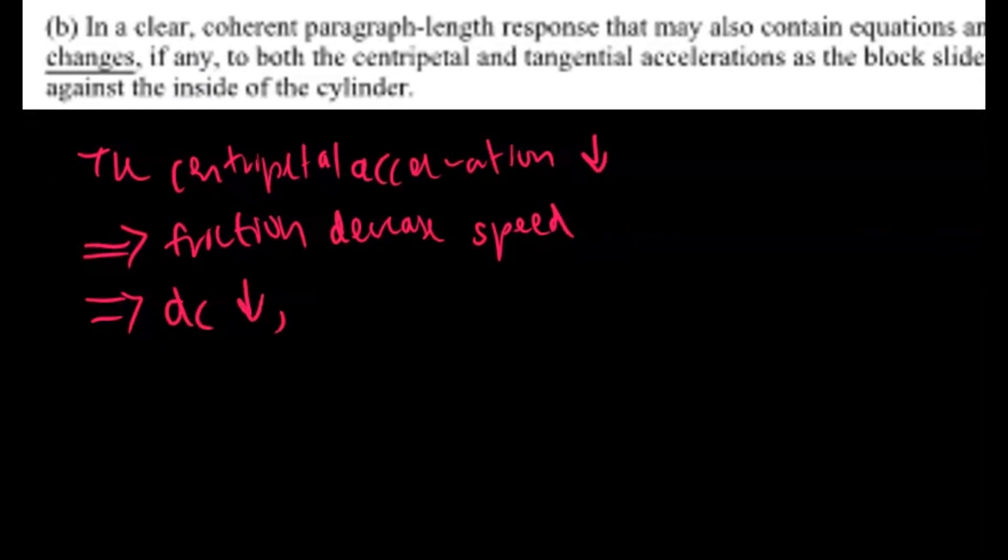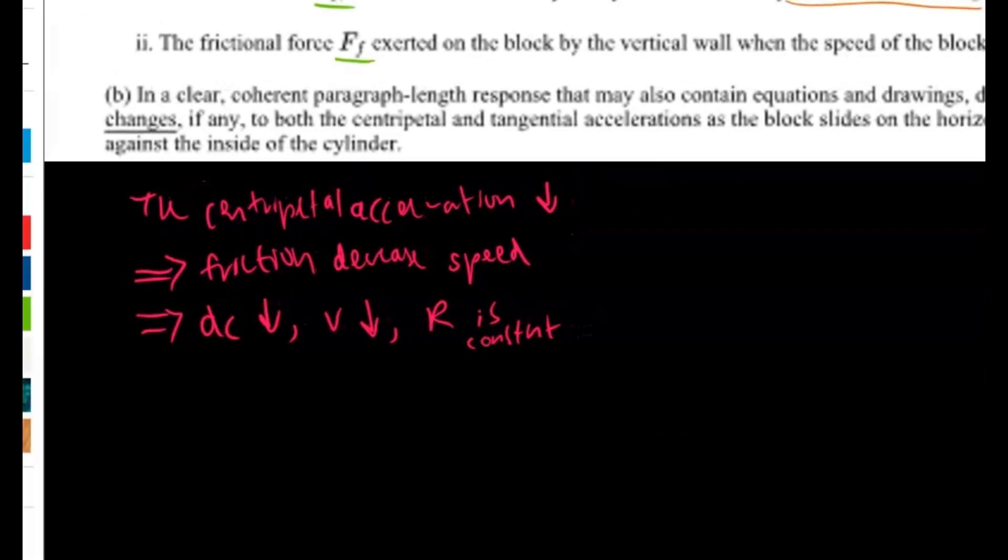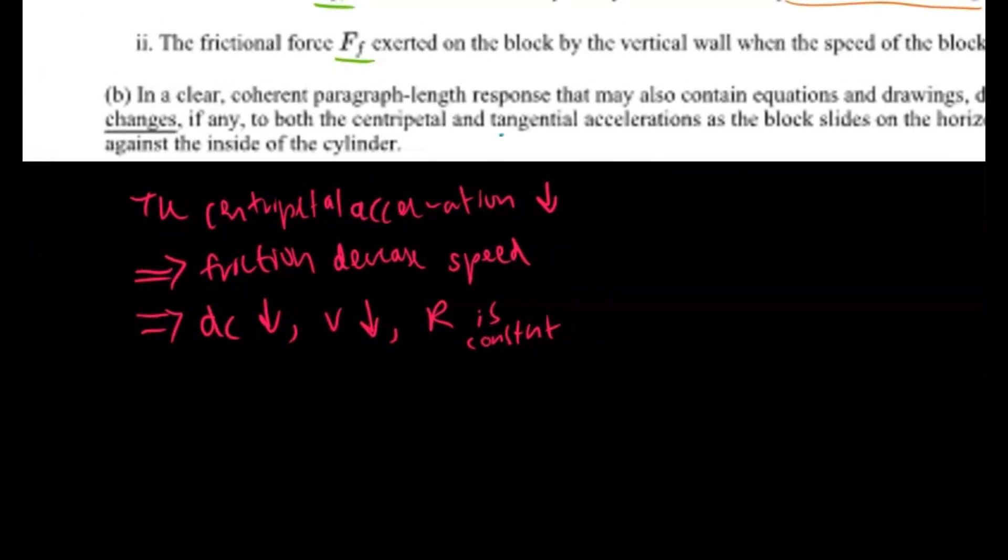So we can write ac decreases if velocity decreases and r is constant. All right, so for this next part, we want to address the tangential acceleration. So this is a little bit more tricky than the centripetal acceleration, because it's not very clear where it's coming from.